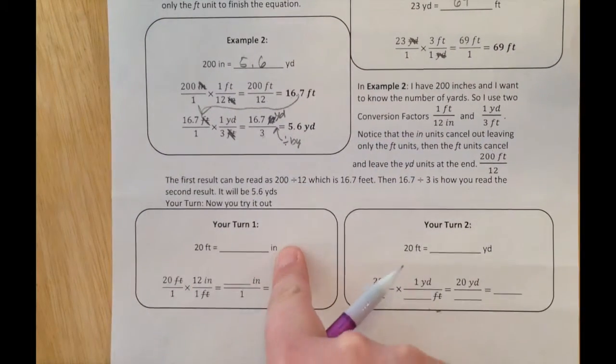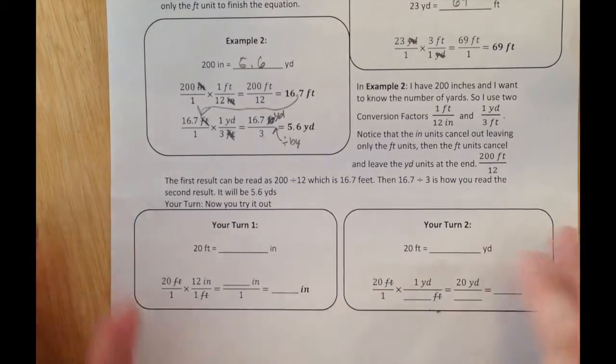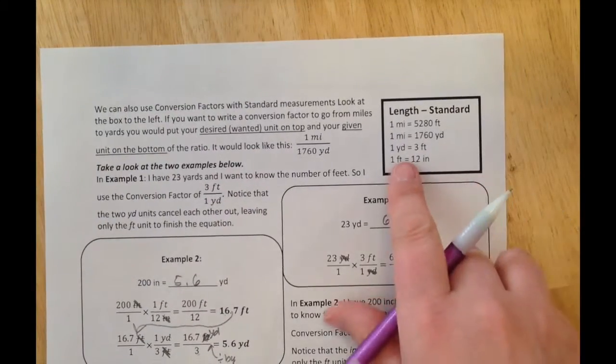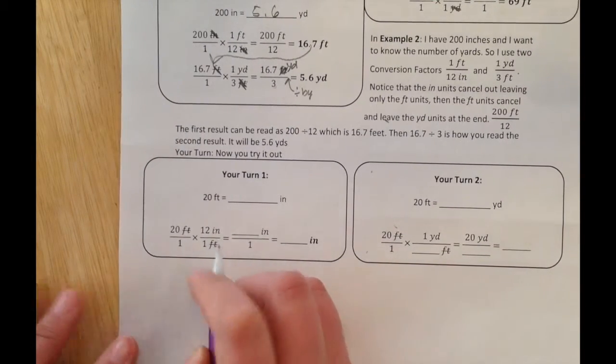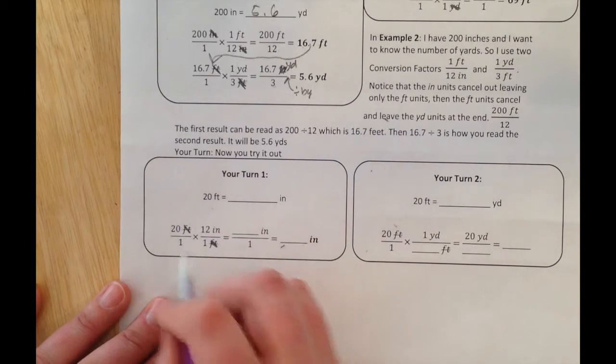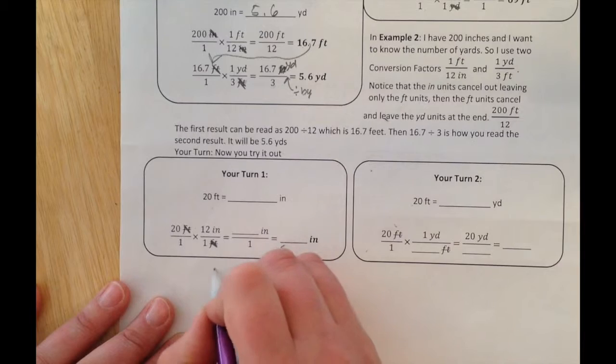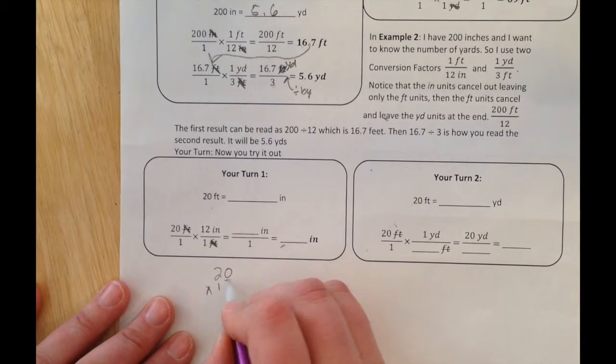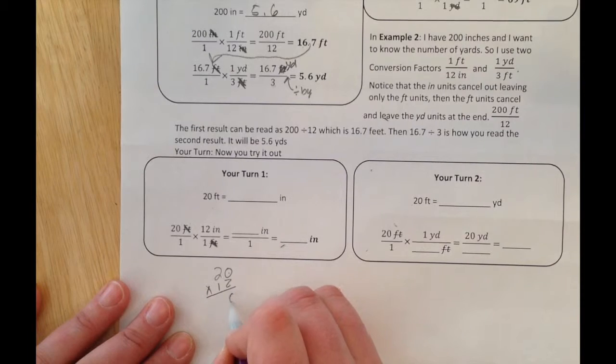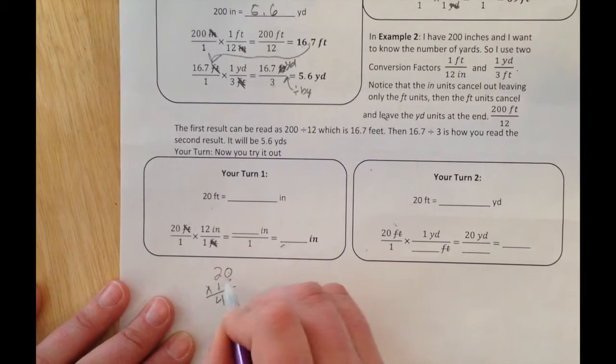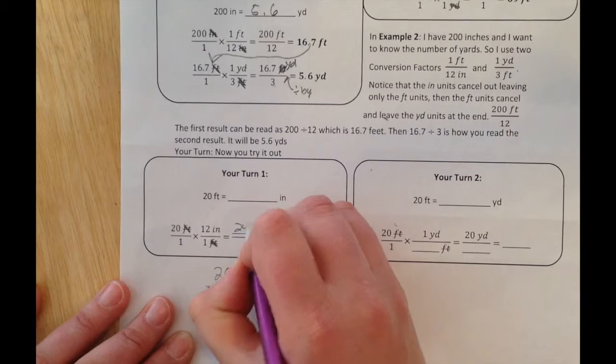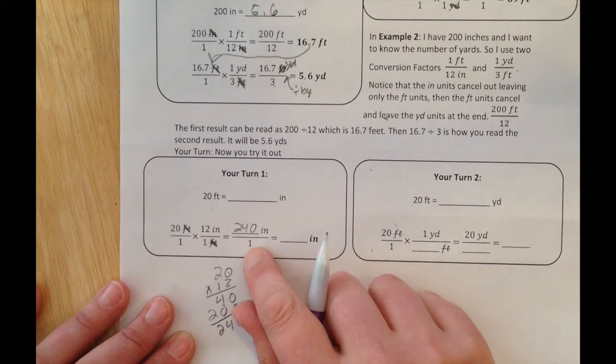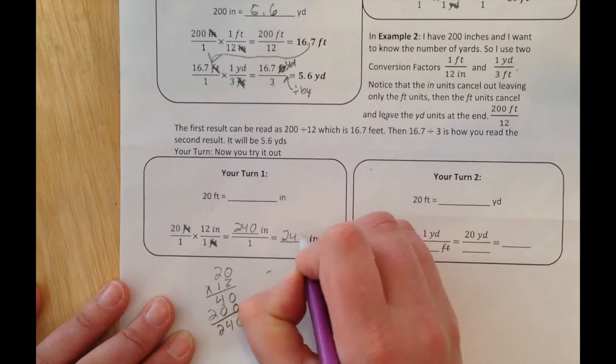Let's try a couple more. If I have 20 feet and want inches, feet and inches are nicely related. I take my 20 feet over 1, 12 inches in each foot. My feet cancel, leaving me with 20 times 12. Let's see, 20 times 12, 2 times 0 is 0, 2 times 2 is 4, that's 240 inches. So my answer is 240 inches.